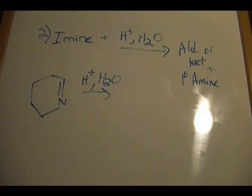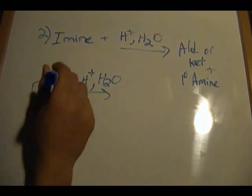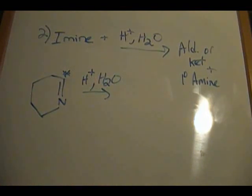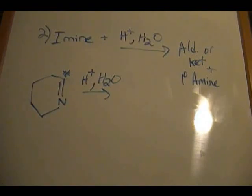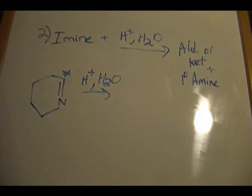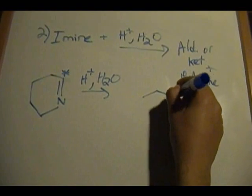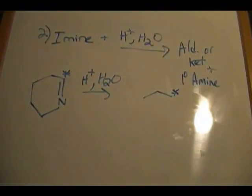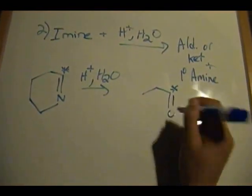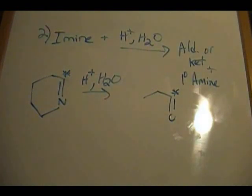The first thing to do is draw and label our star carbon — the carbon of the C=N double bond, right there. What I like to do is draw the starting material without this piece. In this case with rings, you can't really remove that piece because it will just be a long chain. So what I'll do is draw our star carbon here and attach a double-bonded oxygen to it.